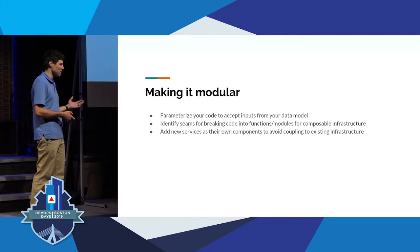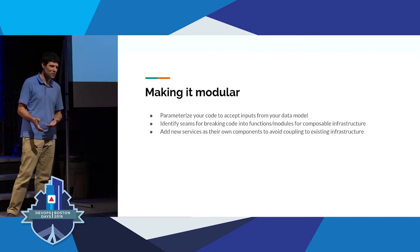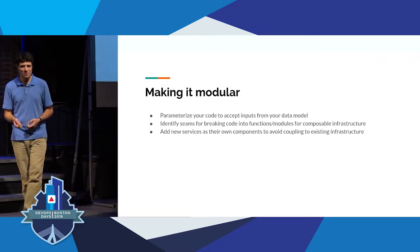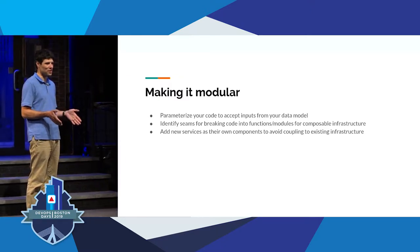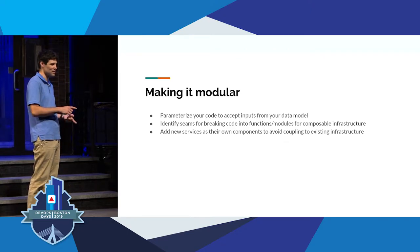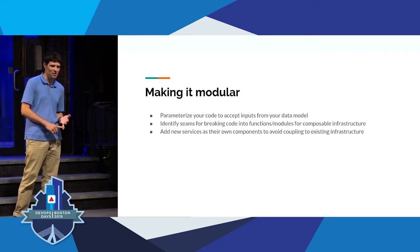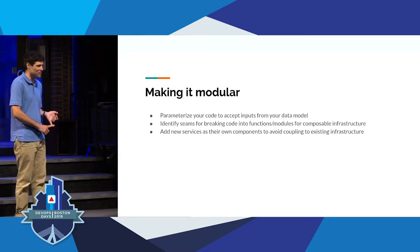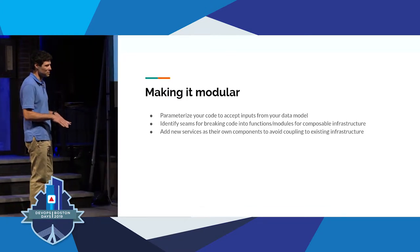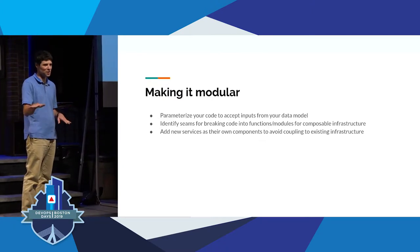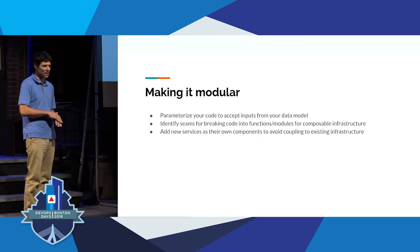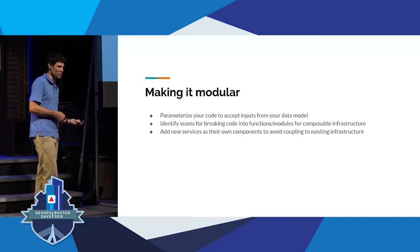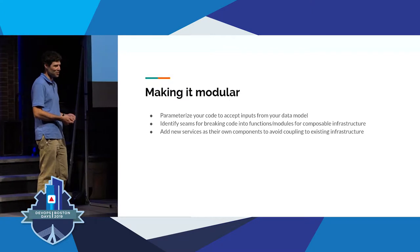Another useful thing for making infrastructure modular is identifying the seams of your infrastructure. Those seams might be vertical — along application boundaries — where an application needs a database, an object storage bucket, a queue, and needs to be in a specific VPC. Or they can be horizontal seams — for example, all of your VPCs need DHCP set up and public internet access, and at another layer, all databases need to be configured so they're not using the default parameter group, so you can change that down the road without having to reboot.